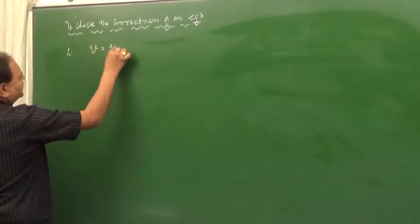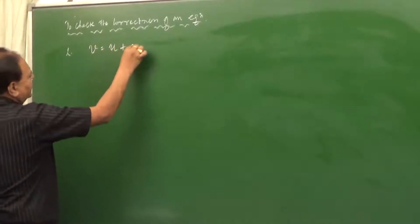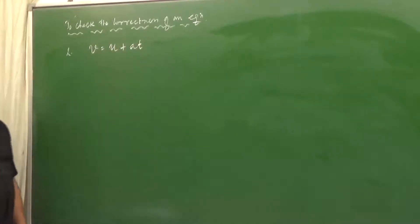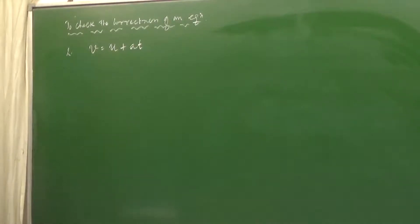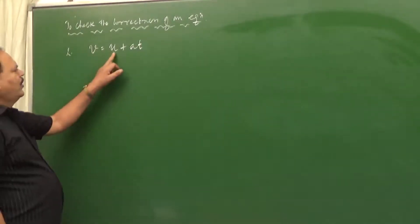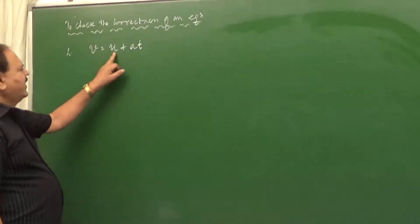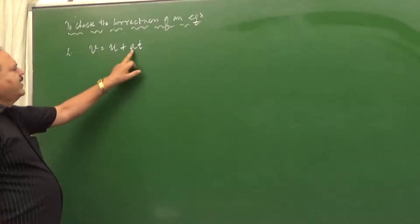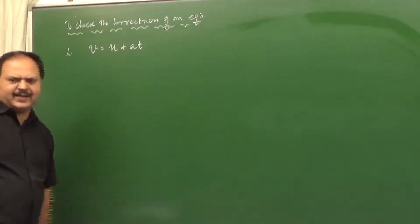Check the correctness of an equation: V is equal to U plus A T, using dimensional analysis. Here, U is initial velocity, V is final velocity, A is the acceleration, and T is the time taken.